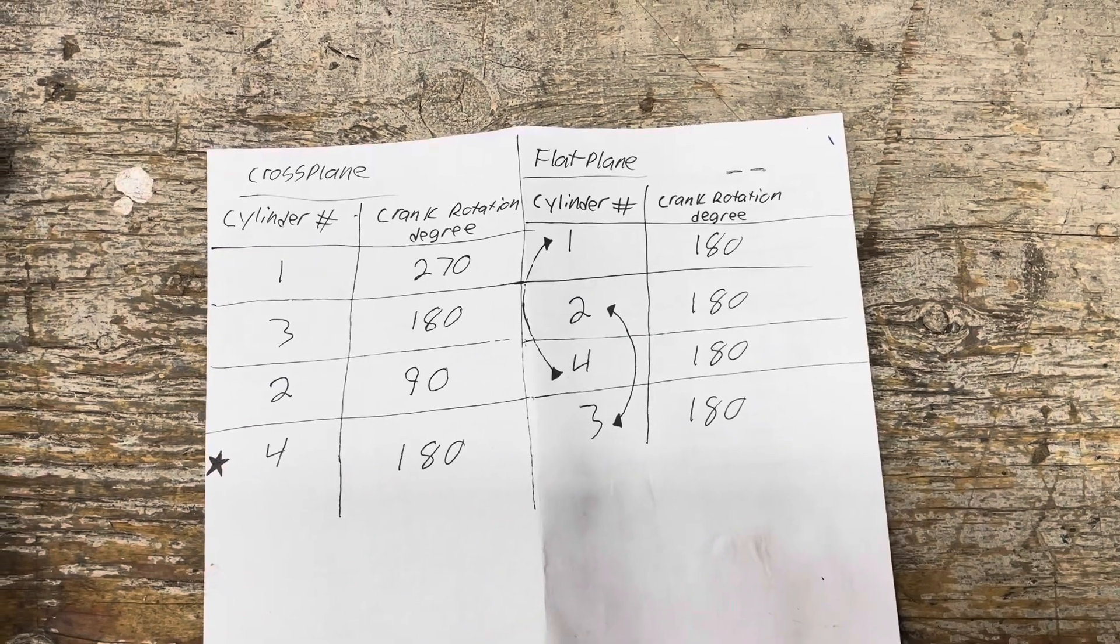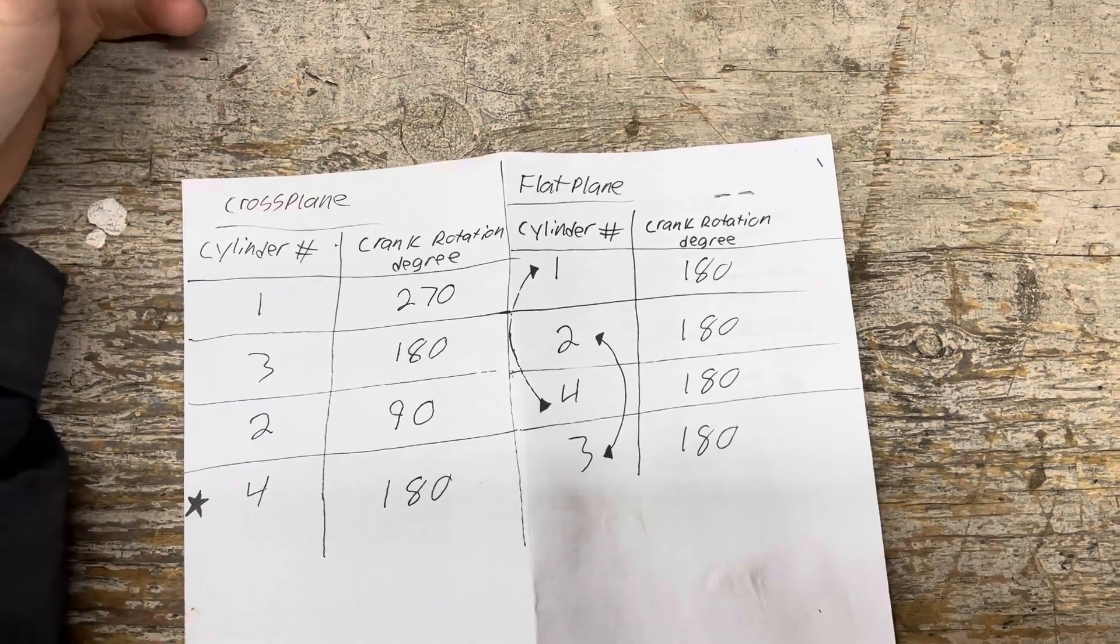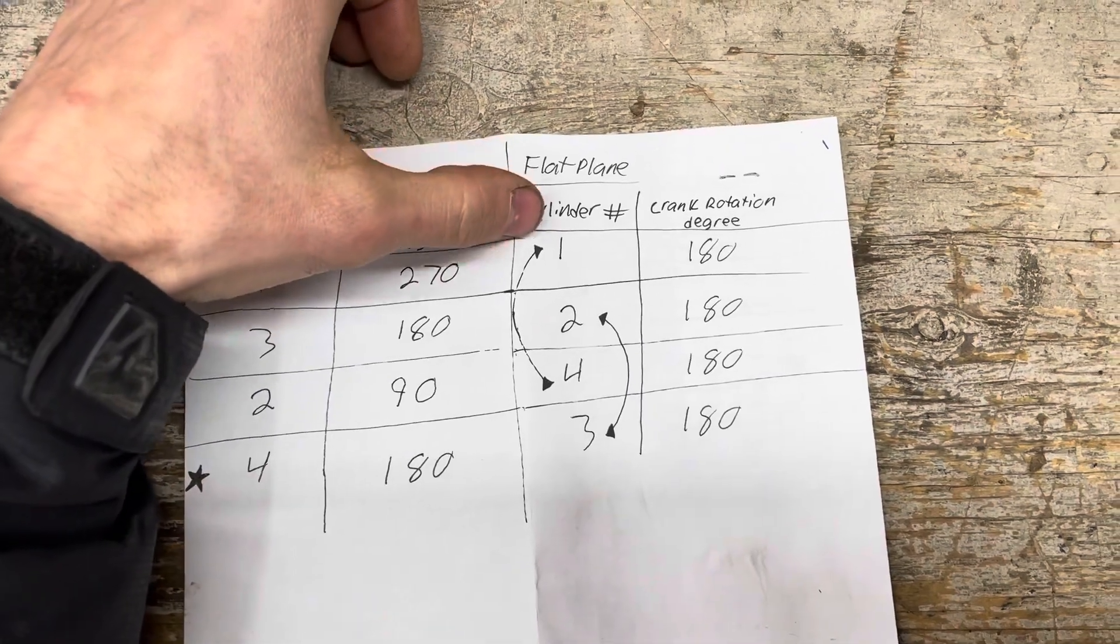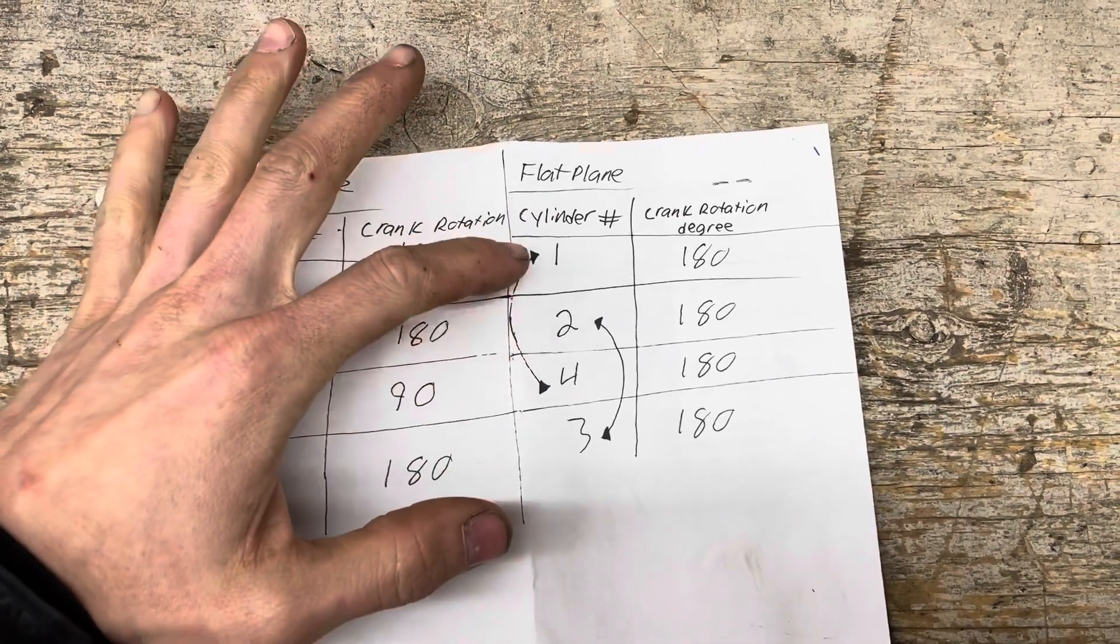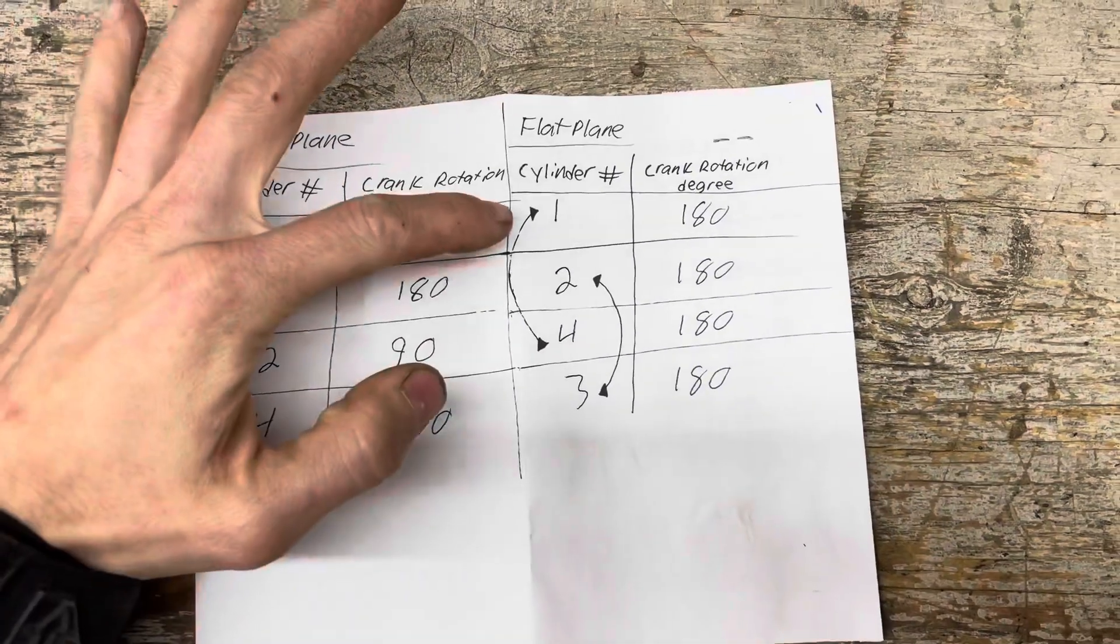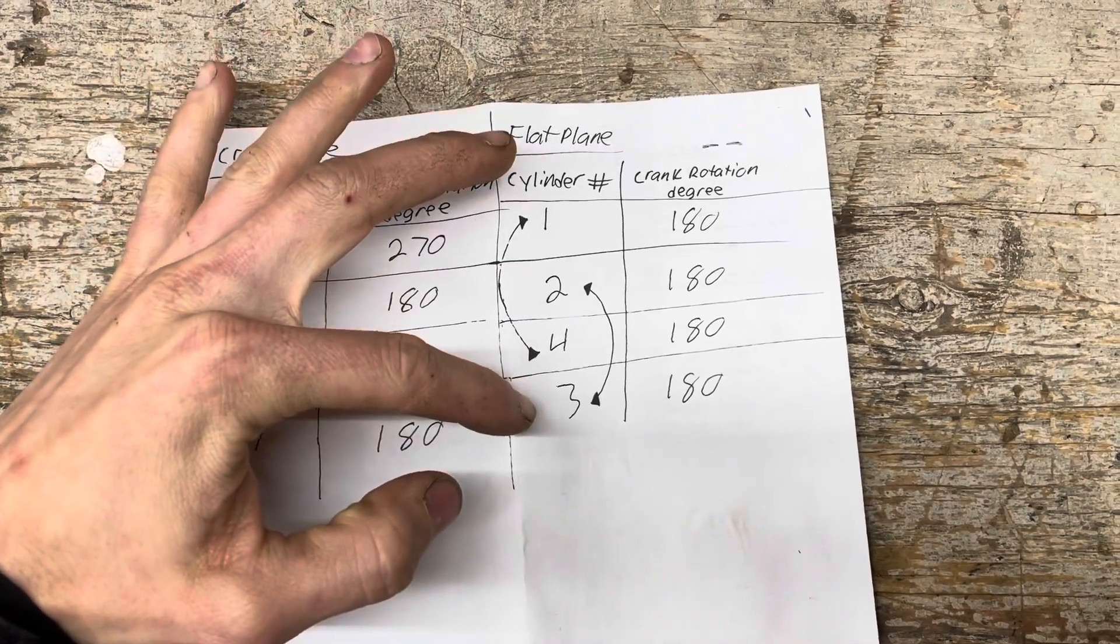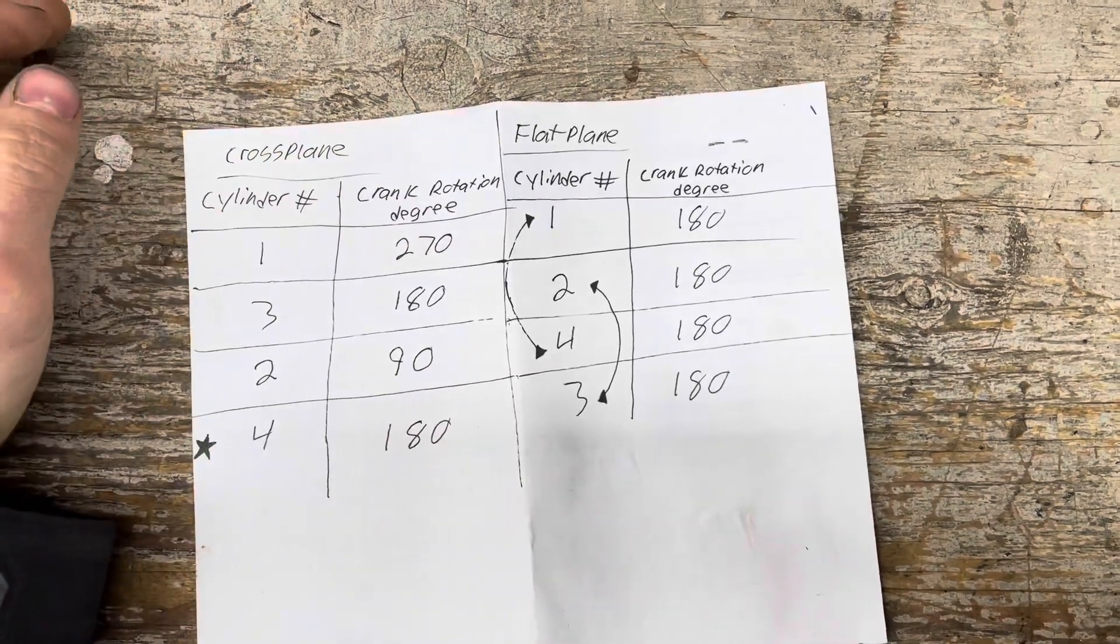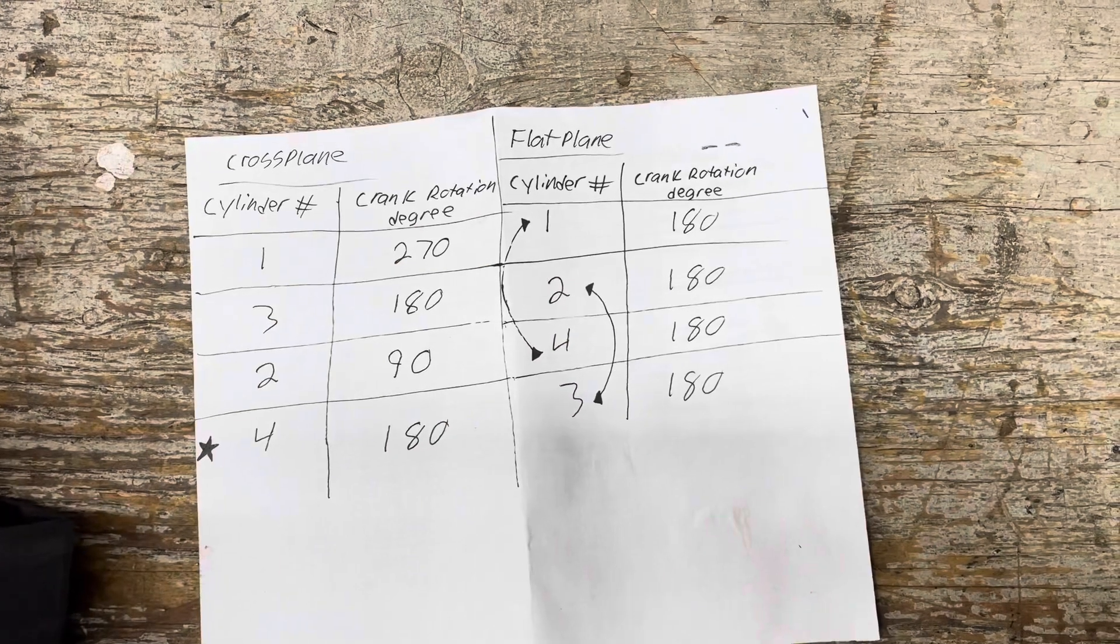So let's start with the flat plane. Flat planes have been around forever and you see them in almost all the crotch rocket style bikes. These are the cylinder numbers. This is your traditional firing order: one, two, four, three in that order. So cylinders one and four are synced together and two and three are synced together. They move up the bore at the exact same time. They just fire on opposite crank rotations.